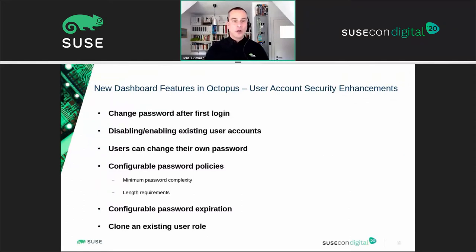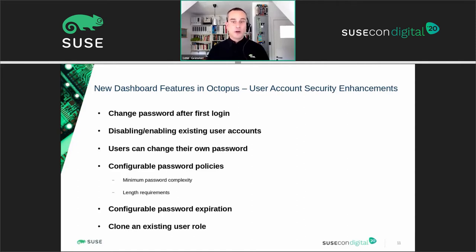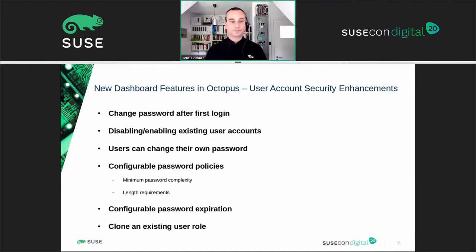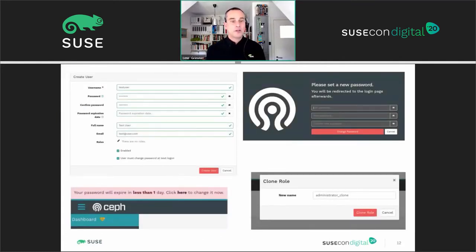In addition to usability improvements, we also continued adding more functionality and safety features to the dashboard's built-in user account and password management. Users can now be forced to change the initial password at the first login, and they can also change passwords without administrator intervention at any time. User accounts can now temporarily or permanently be disabled without having to delete them. The dashboard can also enforce a variety of password complexity rules or let passwords expire after a configurable amount of time. While most of these features are disabled by default, they can be enabled individually to help adhere to local password security policies. It's also now possible to clone existing roles to save time when creating new ones similar to already existing roles.